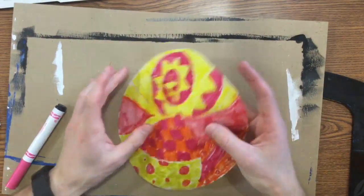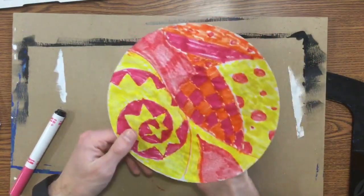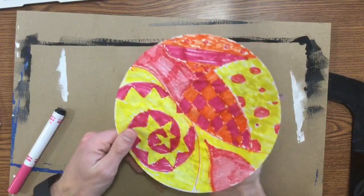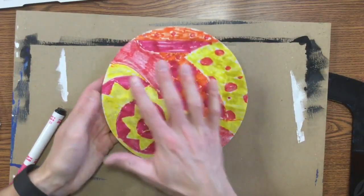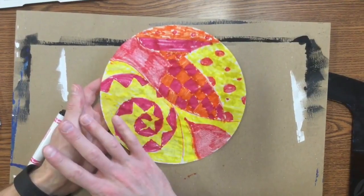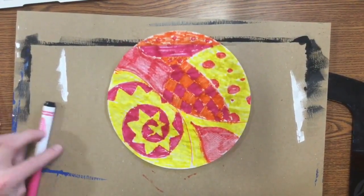When you get your entire coffee filter covered with patterns, you're finished. Put it on the back counter and then you can grab another one and begin working on another one. Alright, so you're using either warm colors or cool colors and we're working on some patterns. When you're done, make sure to clean up after yourself.